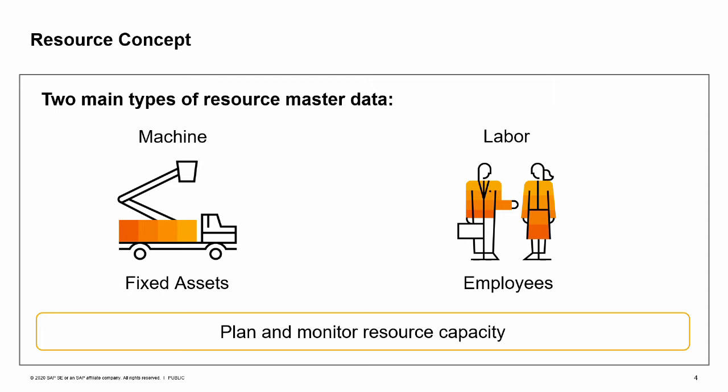When a bill of materials is produced, a machine is often needed in a production process, and an employee may be needed as well, for example, to operate this machine. In SAP Business One, we can plan and define a daily capacity for the resources. By monitoring this capacity, we can optimize the production plan and avoid bottlenecks.